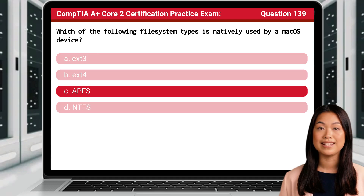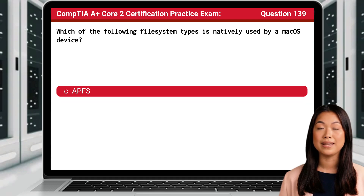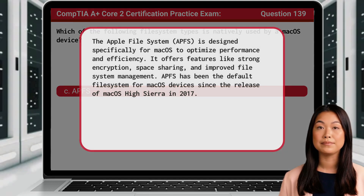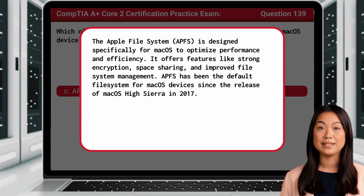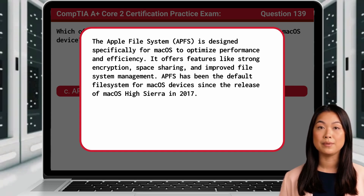The answer is C. APFS. The Apple File System, or APFS for short, is designed specifically for macOS to optimize performance and efficiency. It offers features like strong encryption, space sharing, and improved file system management. APFS has been the default file system for macOS devices since the release of macOS High Sierra in 2017.